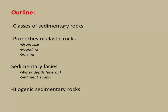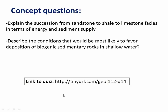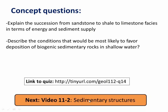In summary, we talked about biogenic versus clastic rocks, then looked at the properties of clastic rocks, discussed sedimentary environments or facies and how they're controlled by water depth and sediment supply, and finished with the basics of biogenic sedimentary rocks like limestone. I'll leave you with a couple of concept questions and a link to the quiz. See you shortly for the second video on sedimentary structures.